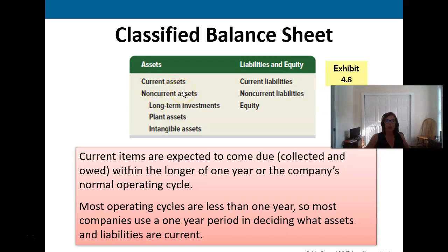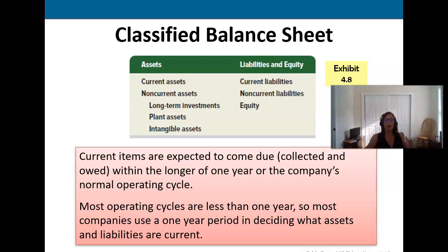Assets are divided into current assets and non-current assets, which include long-term investments, plant assets, and intangible assets. Intangible assets are things we have but can't necessarily touch — they might be trademarks, patents, copyrights, and things like that. Then we have current liabilities and non-current liabilities, and owner's equity. Items we are going to use up or pay within a year are classified as current; anything more than a year is non-current.